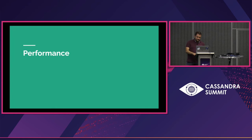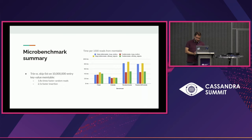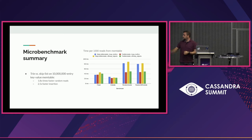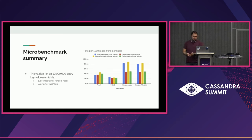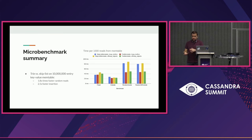What did we get from this? One of the first things we observed is that random accesses into the memtable are about 1.8 times faster. In a micro-benchmark writing 10 million entries, the time to write them was about 2.5 times faster using the trie memtable rather than the skip list. Querying them is again almost twice as fast as the legacy memtable implementation.